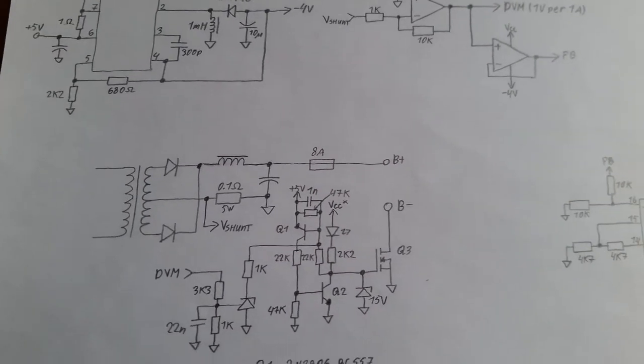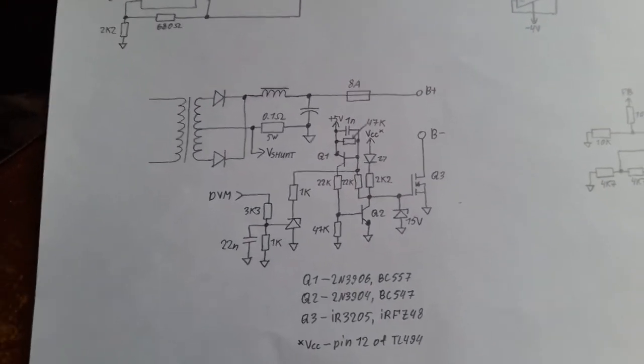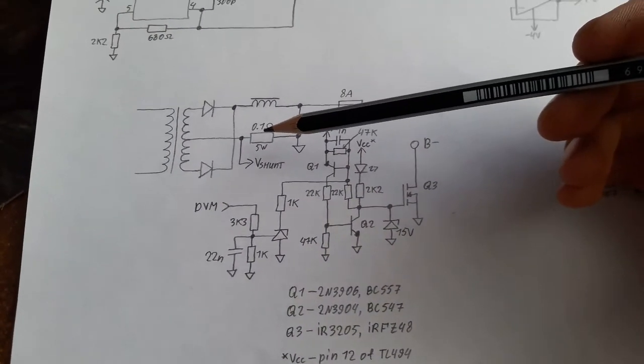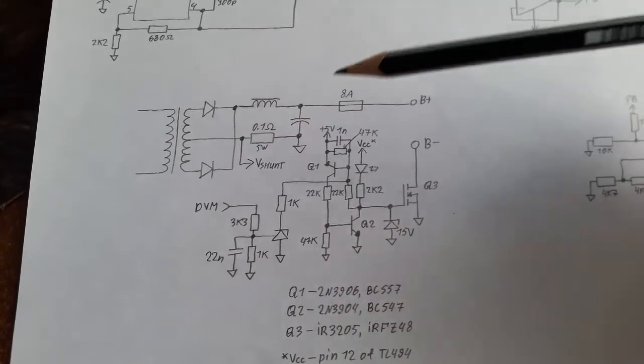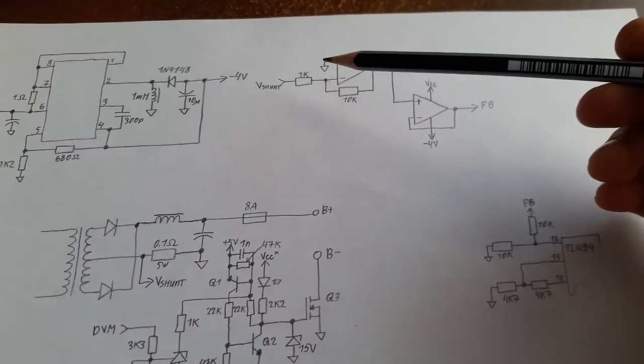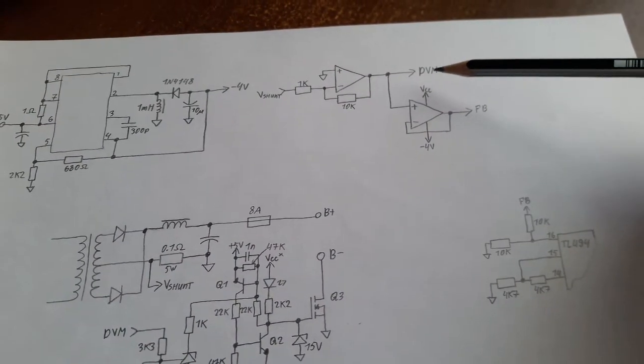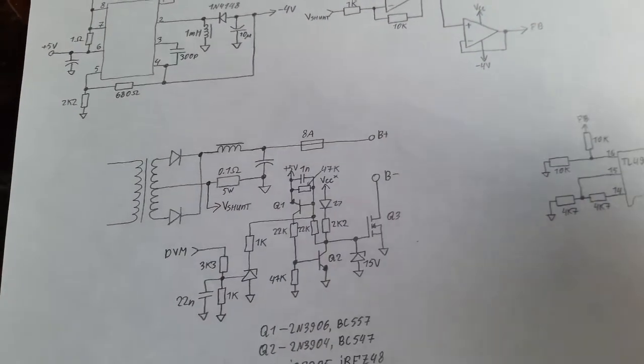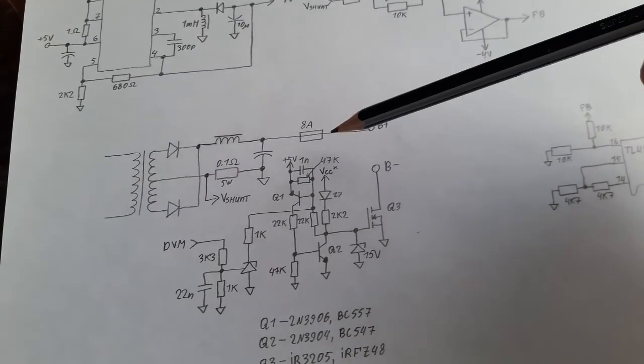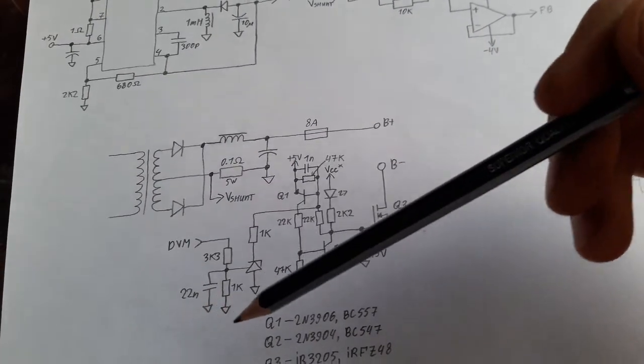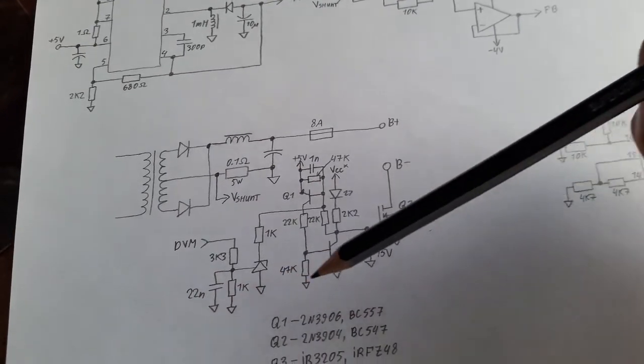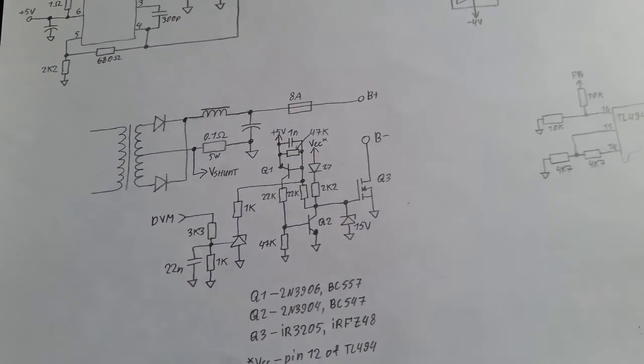0.105 ohm shunt which gets fed again into here, amplified and this signal is gonna get used in this circuit too as you can see right here. Now this little bodginess is what's located on the other board, which was on the right if you watch the previous video.